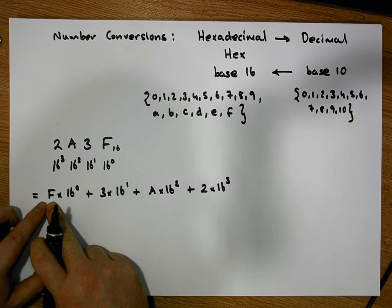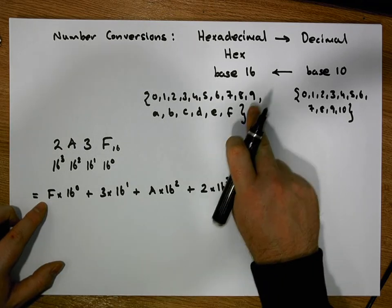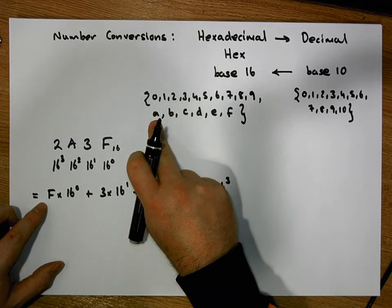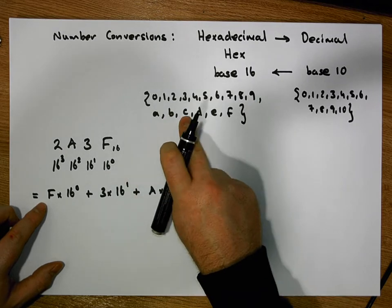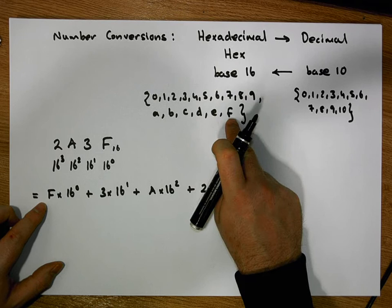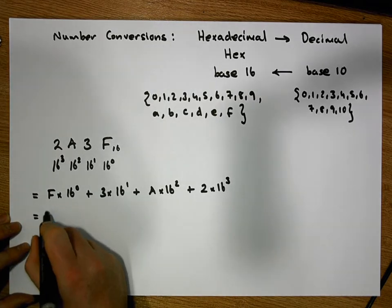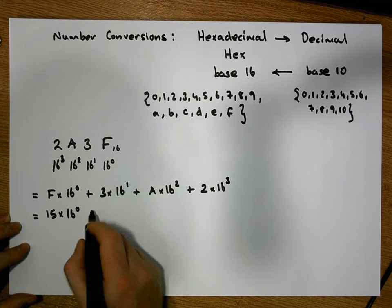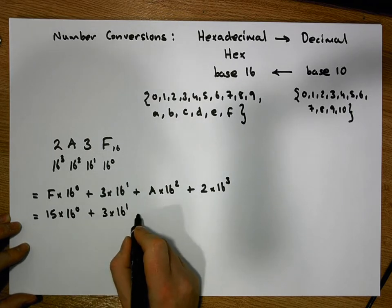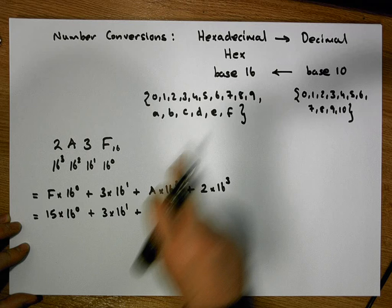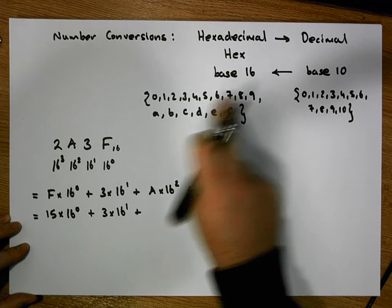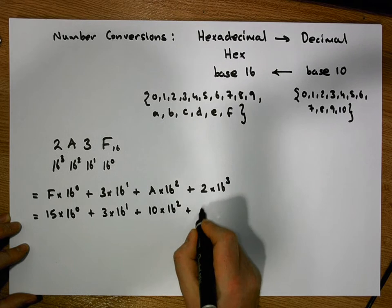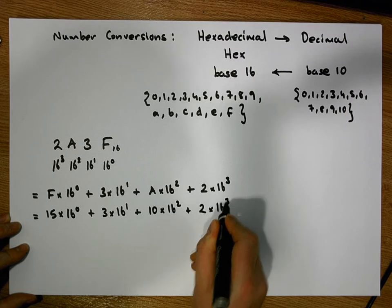Let's remember that F in our number system represents the number 15, so this tells us that we have 15 times 16 to the 0. That's plus 3 times 16 to the 1, plus A represents 10, so this represents 10 times 16 squared, and this represents 2 times 16 cubed.